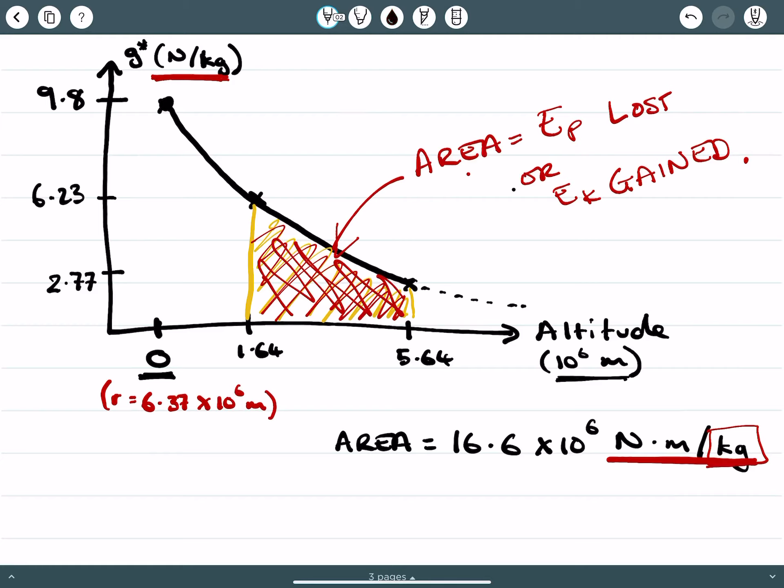But because it's per kilogram, which is given by the respective gravity, we then need to make some calculations based on the value of the mass. So if we were to think about the energy gain, then this is going to be 16.6 times 10 to the 6 times the mass of the satellite. And the energy gain here is 41.5 times 10 to the 9 joules. But that is not just energy gain. That's potential energy loss as well.